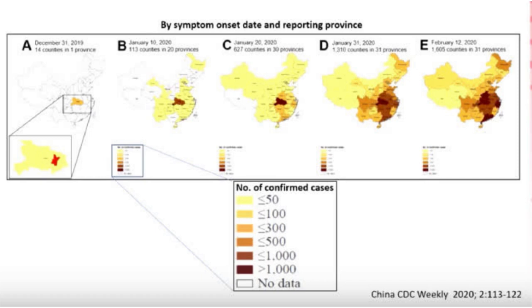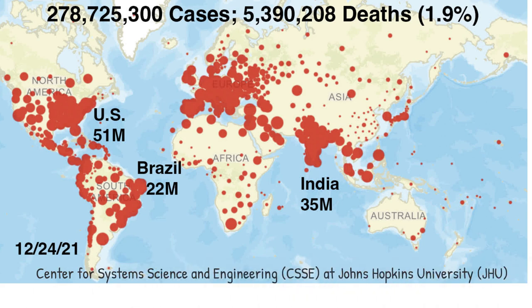These maps document the rapid spread throughout China. Each 10-day interval documents spread outward from the city of Wuhan, where the market was located, into the entire Hubei province and progressively into the other eastern provinces. The infection quickly spread throughout the world as a consequence of Chinese citizens traveling to Europe, particularly to northern Italy, and tourists infected while visiting Italy then spread the virus to New York City.